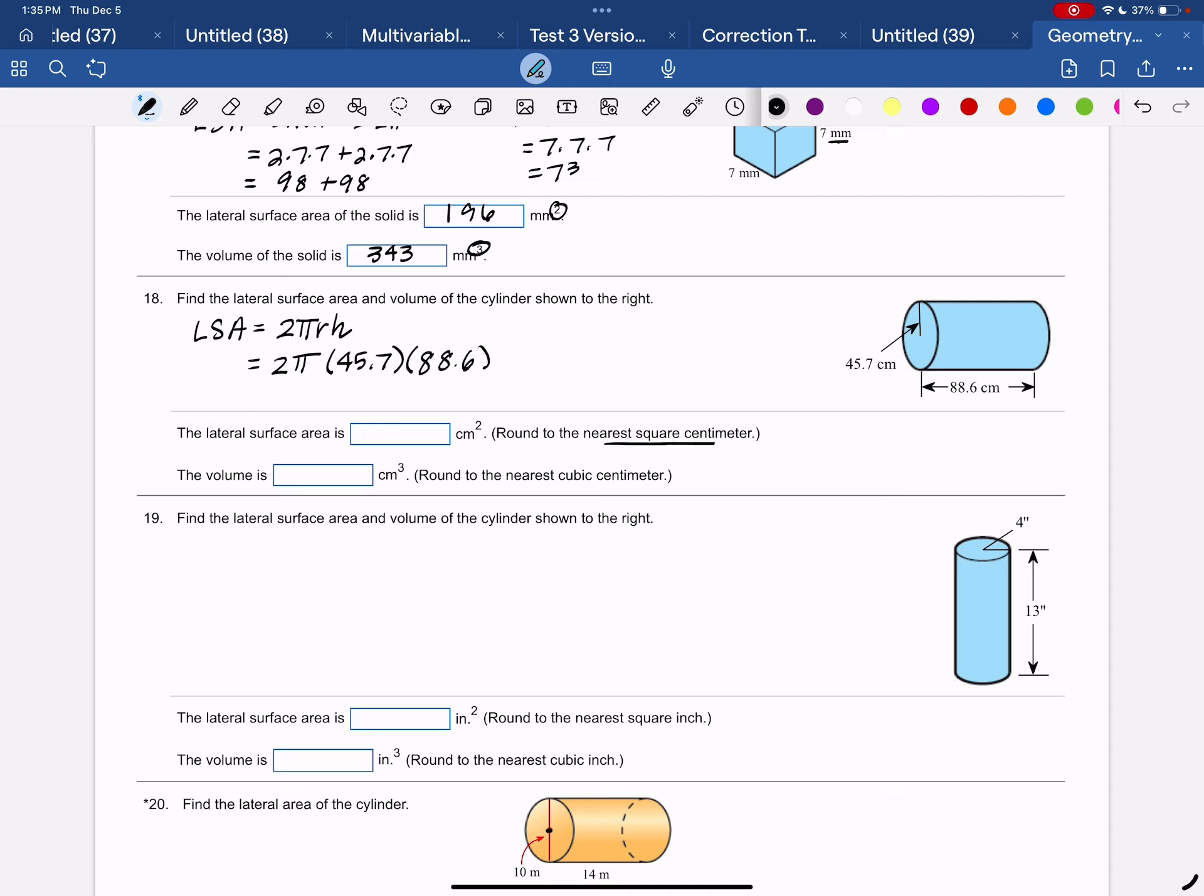Now they want us to round it. So I'm going to use 3.1415, probably more accurate. Of course, more accurate if you use the pi key. 45.7 and 88.6.